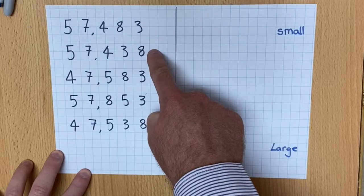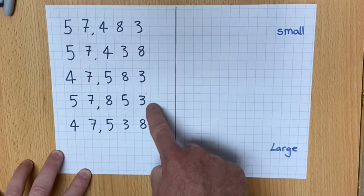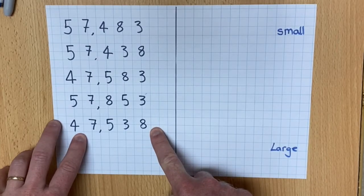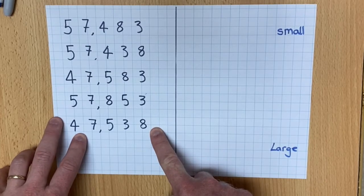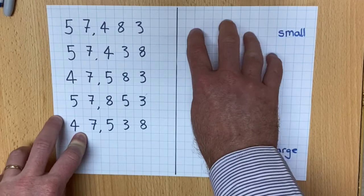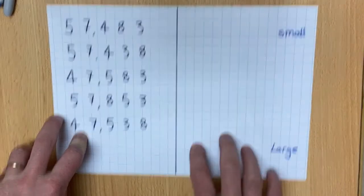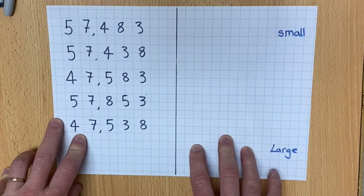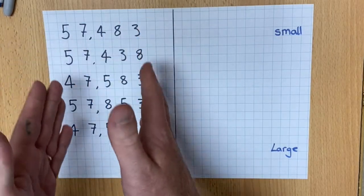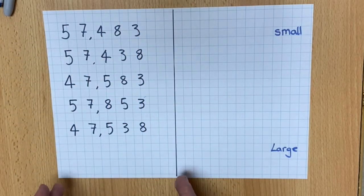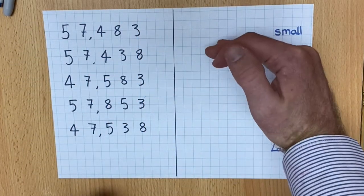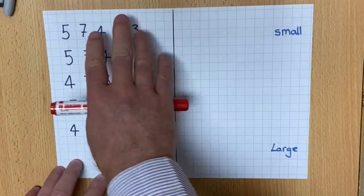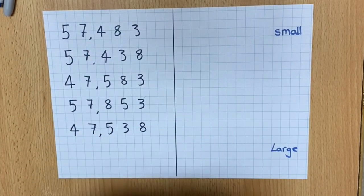So in front of me I have five numbers and what I'm going to do is I'm going to put them in order from the smallest to the largest. Now before I even start to put these numbers from smallest to largest, I need to think about what all of these numbers are worth.